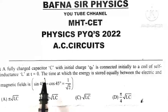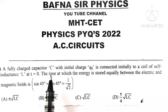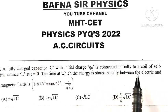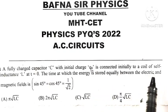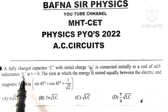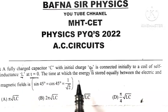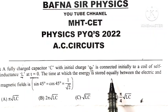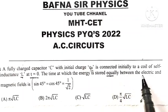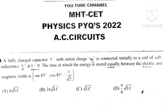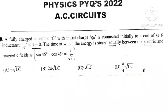A fully charged capacitor C with initial charge Q0 is connected to a coil of self-inductance L at time t equal to 0. The question asks for the time at which energy is stored equally between the electric and magnetic field. This is a case of LC oscillation.